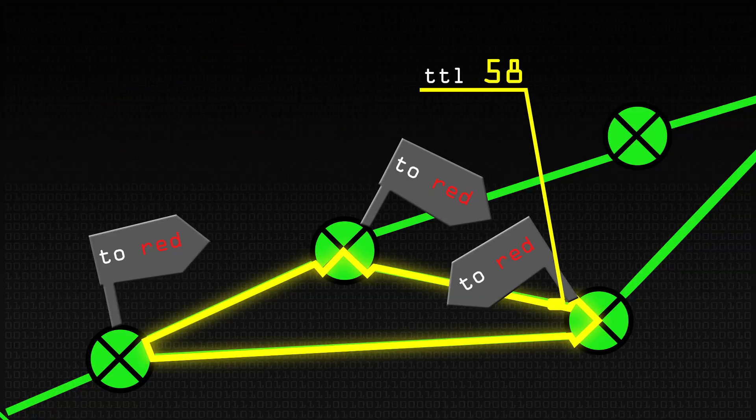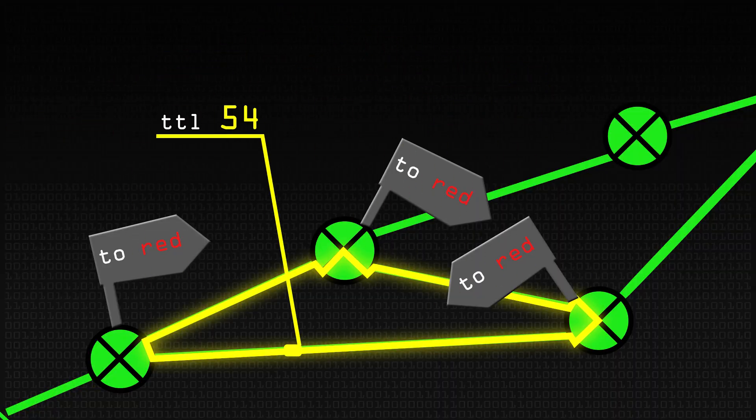When the time to live counter reaches zero, the router says this packet's stuck, it's expired, we're going to throw it away. This allows a really neat trick. This was created by Van Jacobsen, one of the great creators of the internet - one of the men who helped in the fundamental design of the transmission control protocol. He realised that this time to live counter could be exploited.